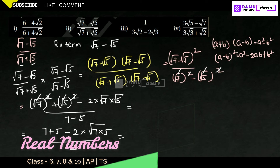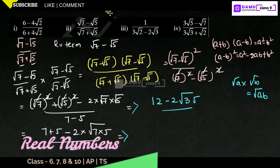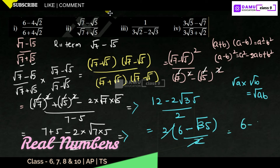The square and square root cancel to give 7 plus 5 minus 2 times root 7 times root 5, divided by 2. Using the rule root a times root b equals root ab, we get 12 minus 2 root 35 divided by 2. Taking 2 as common factor: 2 times (6 minus root 35) divided by 2. The 2s cancel, giving our final answer: 6 minus root 35.